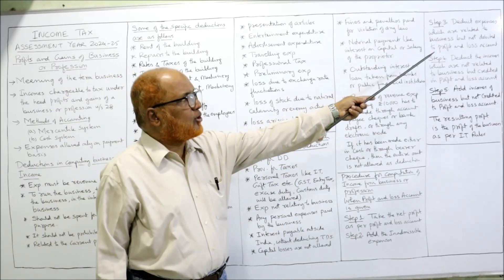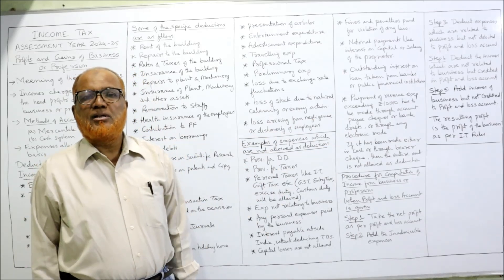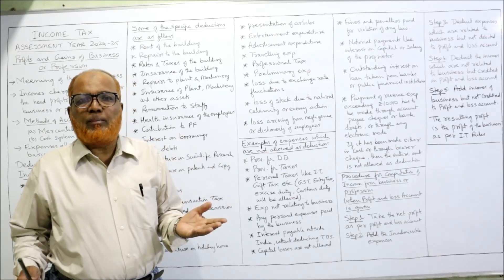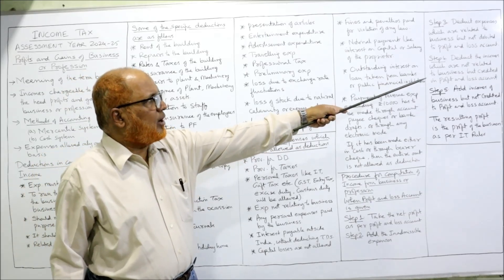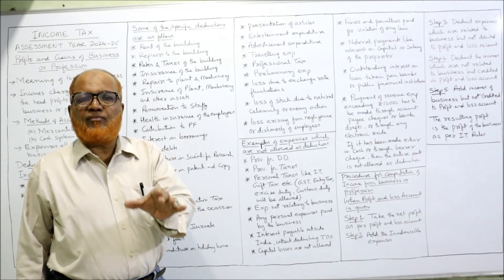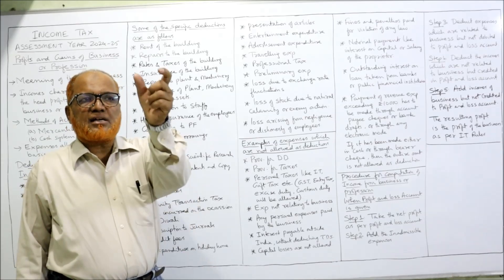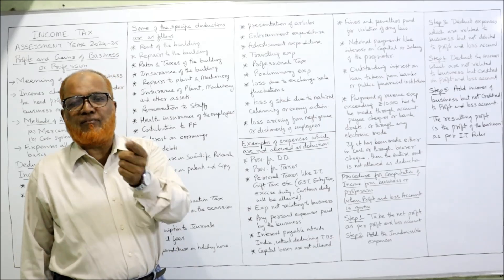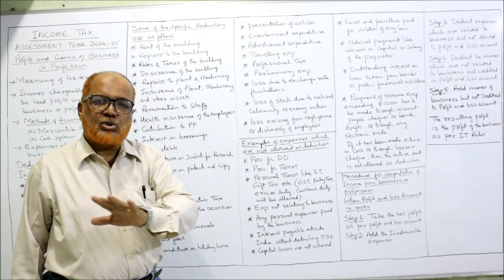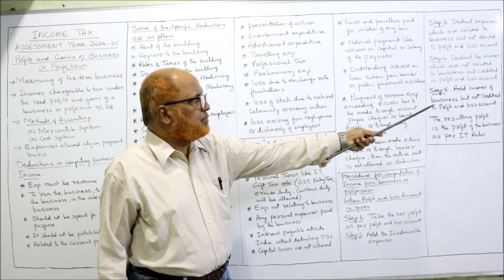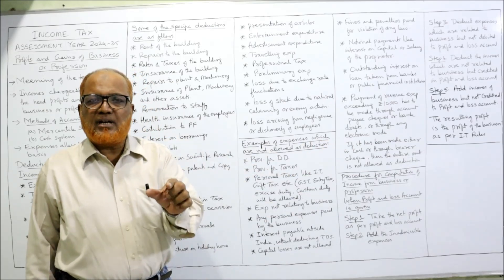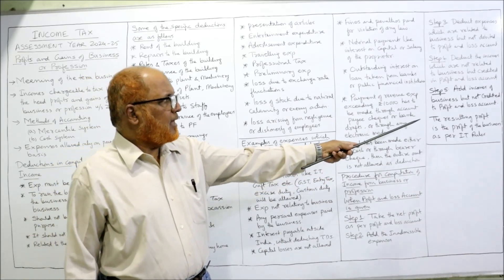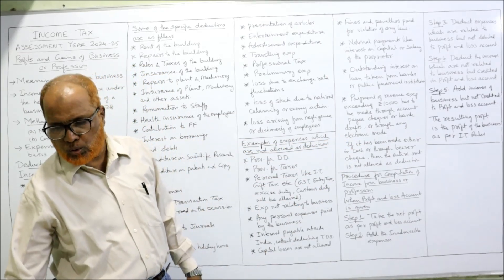Step 3: Deduct expenses which are related to business but not debited to the profit and loss account — these are expenses allowed by the Income Tax Act but not recorded in the profit and loss account, so now we deduct them. Step 4: Deduct incomes which are not related to business but credited to the profit and loss account. For example, rent from property is credited to the profit and loss account, but the Income Tax Act says rent from property is not a business income — it is income from house property — so we deduct it. Then add incomes of the business which are not credited to the profit and loss account. The resulting profit is the profit as per income tax rules.